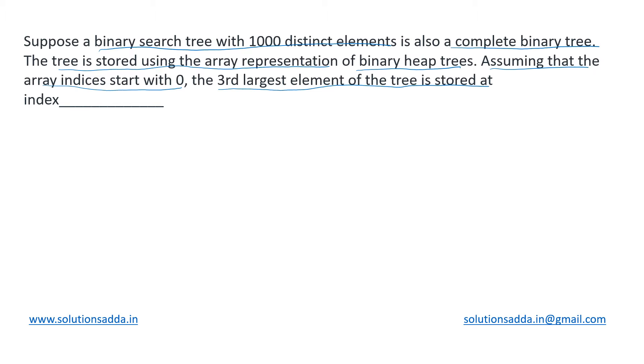That's what we need to find out. So for this, let us first consider the smaller version of the tree. It will be something like this, and it is stored in the array representation of binary heap trees. So the indices would be made this way: 1, 2, 3, 4, 5, 6, 7, 8, 9 and so on.